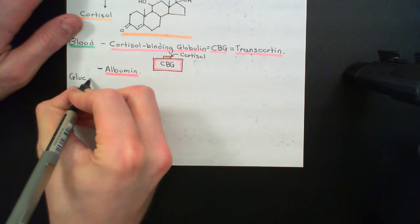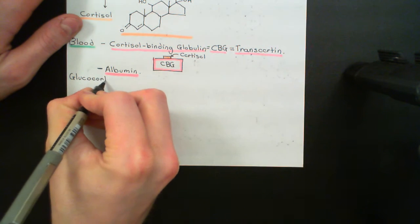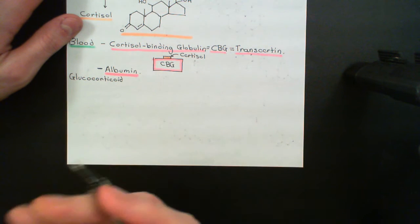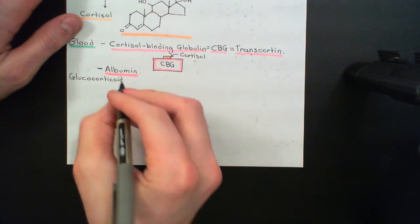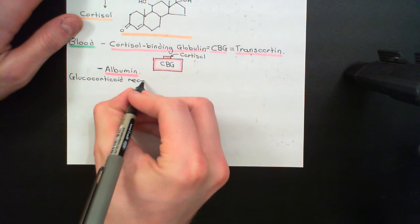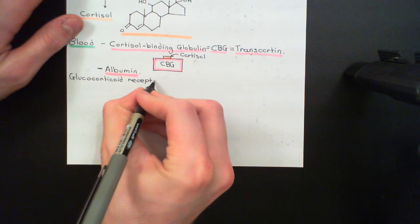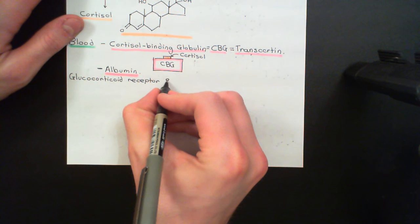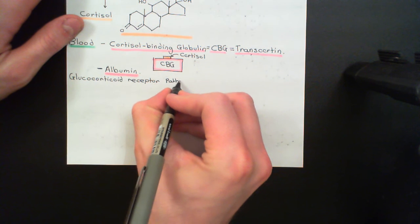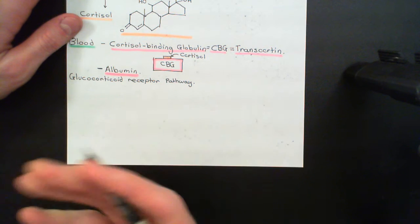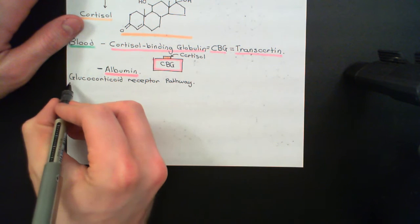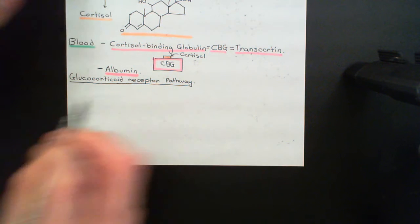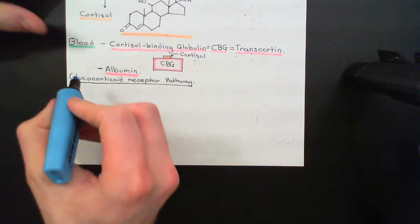Glucocorticoid receptor pathway. We are trying to understand how it is that cortisol actually has an effect on cells — it's going to change the behaviour of cells, but how? It's going to work by binding to a receptor known as the glucocorticoid receptor, which is then going to initiate a pathway to change the gene expression within cells, and that's going to lead to the change in the behaviour of the cells.